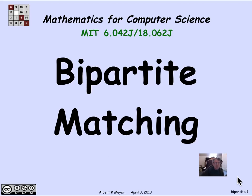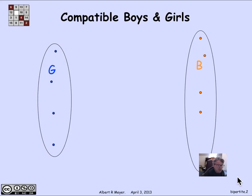The stable match problem we just looked at is one example of a bipartite matching problem. In a bipartite matching problem, you've got a simple graph where the vertices are split into two groups — as in the stable matching problem, we can call them the girls and the boys. The definition of a bipartite graph is a graph where there are left vertices and a disjoint set of right vertices, every vertex is either left or right, and edges only go between a left vertex and a right vertex.